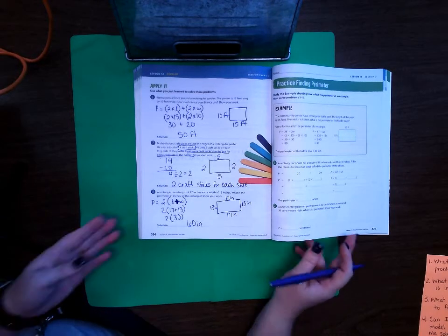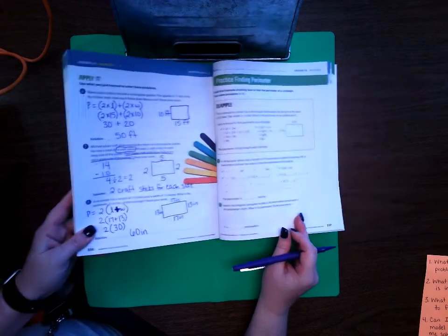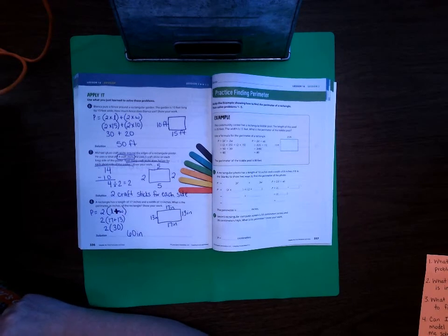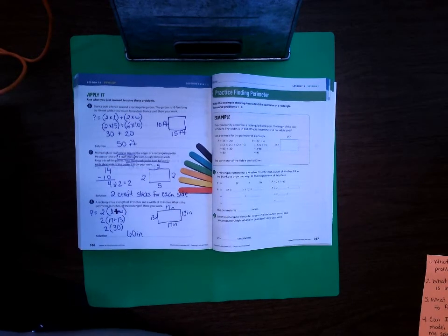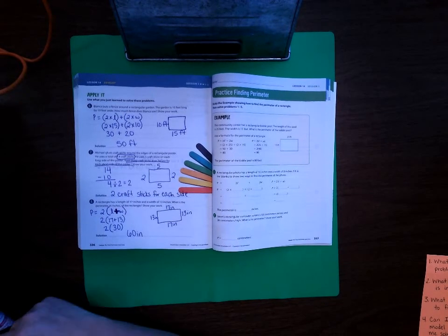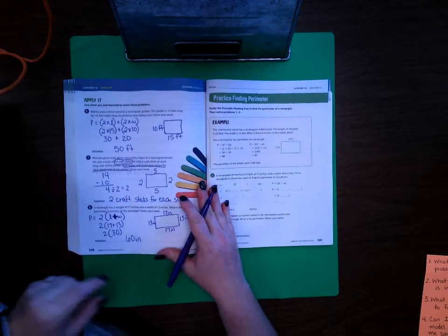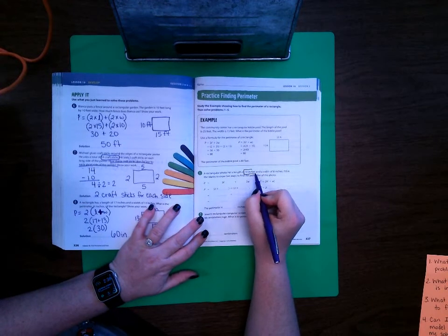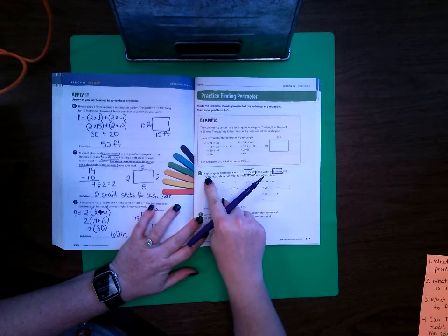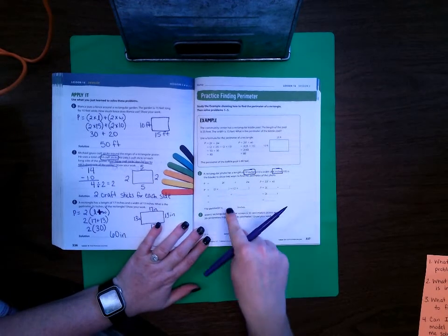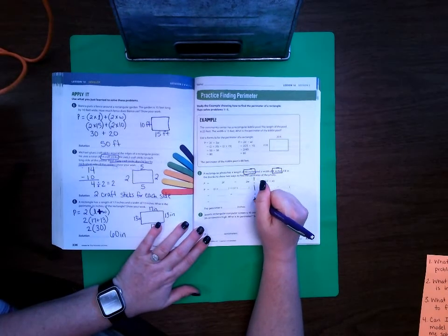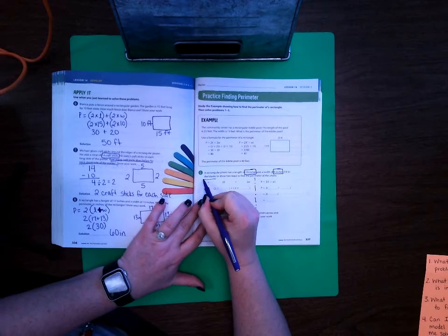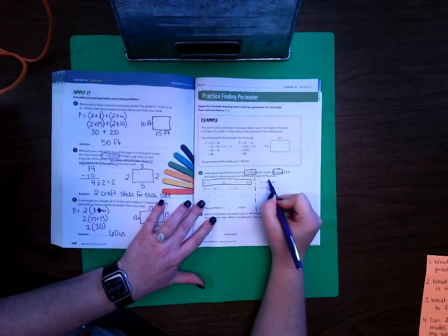Let's go ahead and move on to page 337. This page will be a good page for you to try on your own to see if you are understanding what we are learning or if you need extra work on it. On page 337, right here it says a rectangular photo has a length of 10 inches and a width of 8 inches. Fill in the blanks to show two ways to find the perimeter of the photo. So it's kind of like we're doing the problem two times here. But this is one of the formulas and then this is the other formula.